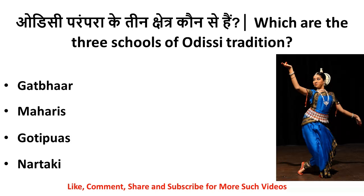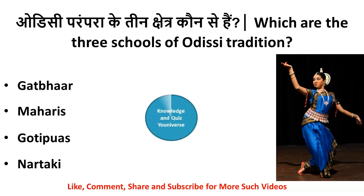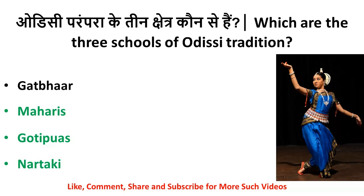Which are the three schools of Odissi tradition? The three schools of Odissi tradition are Maharis, Gotipuas and Nartaki. These are the important three schools of Odissi dance tradition.